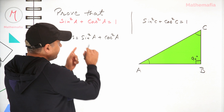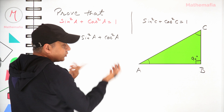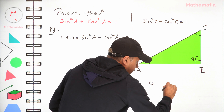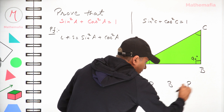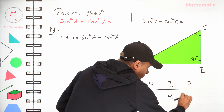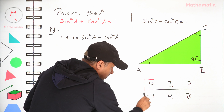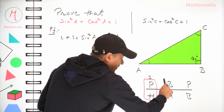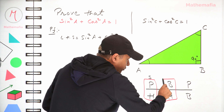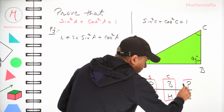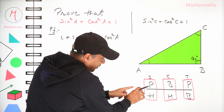To remember the values of sin a and cos a, we use the mnemonic 'Pandit Badri Prasad Har Har Bole': perpendicular over hypotenuse is sin, base over hypotenuse is cos, and perpendicular over base is tan. We need sin and cos here.